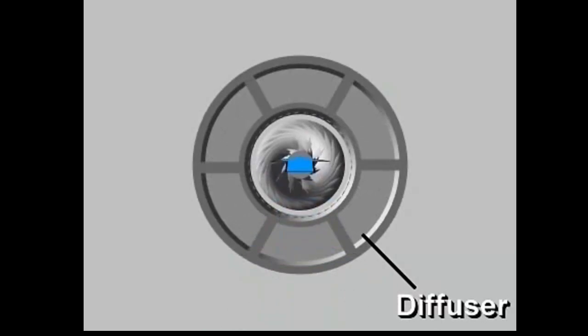As high velocity vapor moves radially outward through the diffuser, the flow area increases, slowing the vapor and increasing the static pressure. Some centrifugal models have diffusers with vanes or pipes, which change flow direction and further slow the vapor.